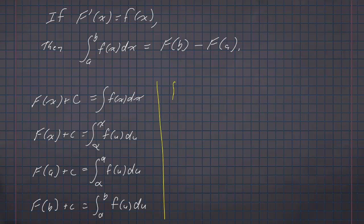Now here's where I start to get a little bit cute. The integral from a to b of f(x) dx, I can split up as the integral from a to alpha of f(x) dx, plus the integral from alpha to b of f(x) dx.